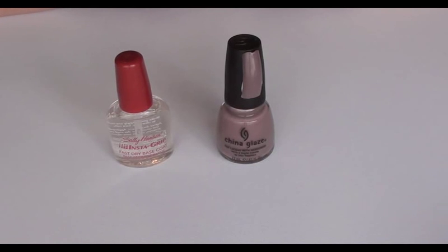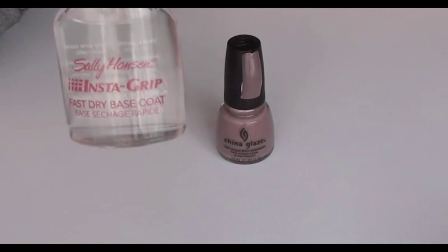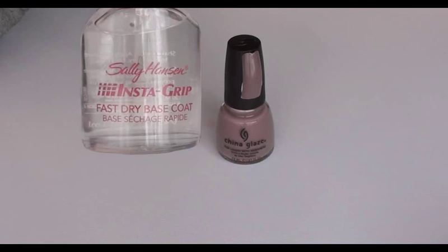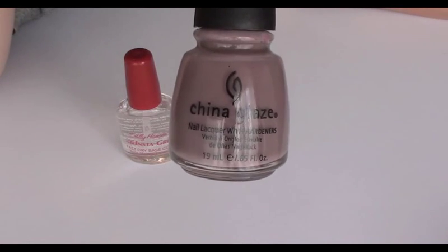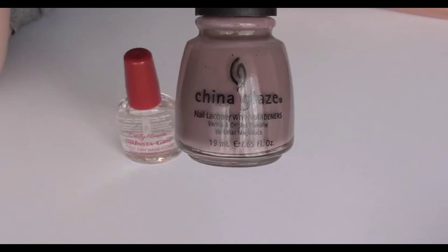Then you want to apply your base coat and your base color. In this case I'm using Sally Hansen Instagrip Fast Dry Base. And the base color I've chosen is China Glaze Channelesque.